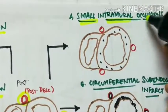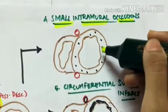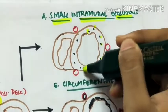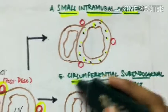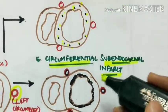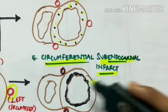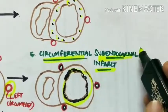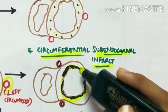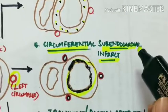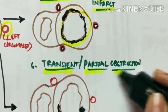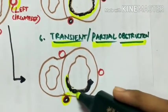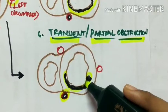Small intramural occlusions spare the coronary arteries but cause microinfarcts in the myocardium. In circumferential subendocardial infarct, the three vessels are not completely occluded but partially occluded, resulting in subendocardial infarction circumferentially involving the whole myocardium. Transient or partial obstruction of the left anterior descending artery results in a partial infarct of the anterior surface of the left ventricle.